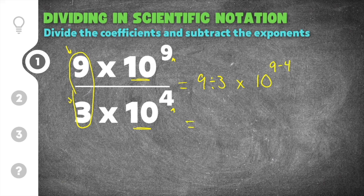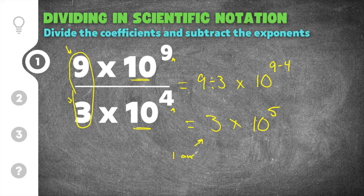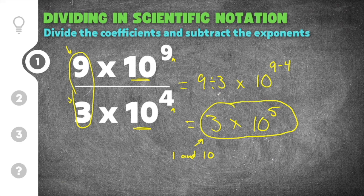Simplifying: 9 divided by 3 is 3, times 10 to the 9 minus 4, which is 10 to the 5th. We check if this is in correct scientific notation — the coefficient 3 is between 1 and 10, so this is the solution. All we did was divide the coefficients, keep the base of 10, and subtract the exponents.